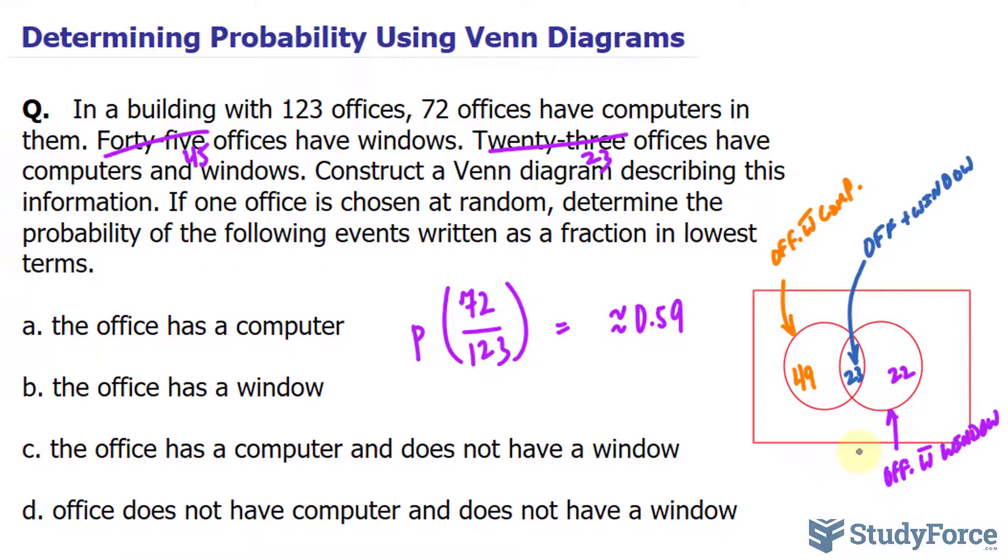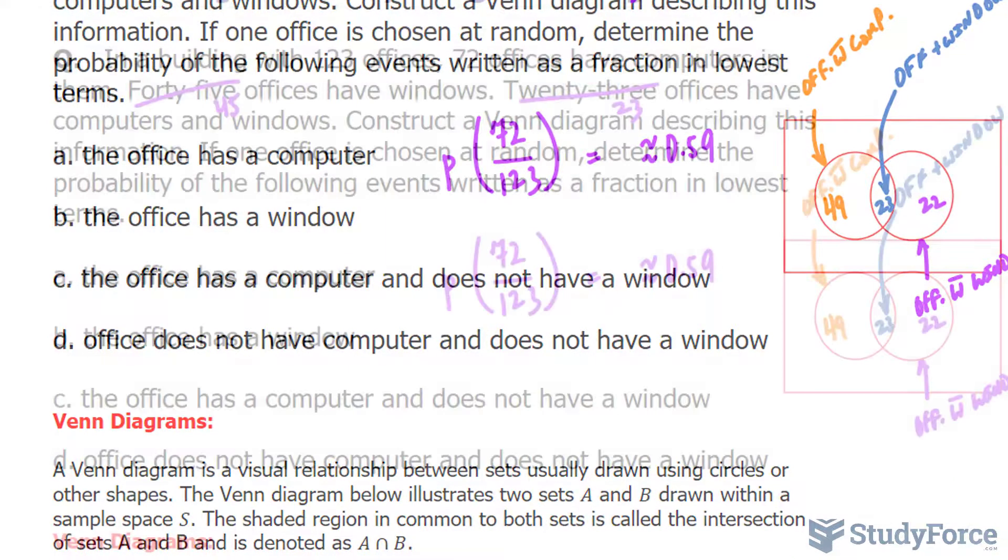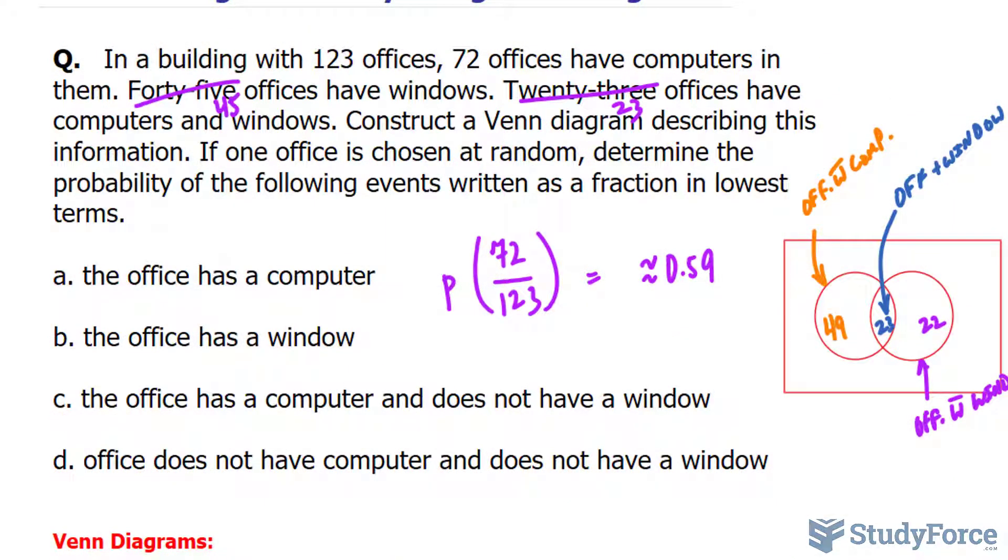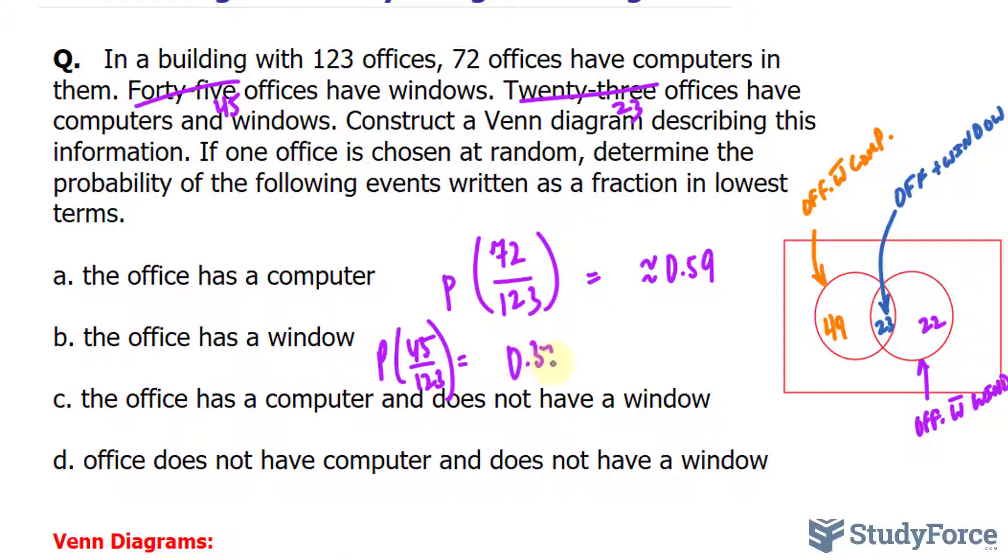Let's use this information to help us solve the rest. Part b: the office has a window. In the question, we are told that 45 offices have windows. All I have to do is take the probability of 45 over 123. 45 divided by 123 gives us 15 over 41, or approximately 0.37.